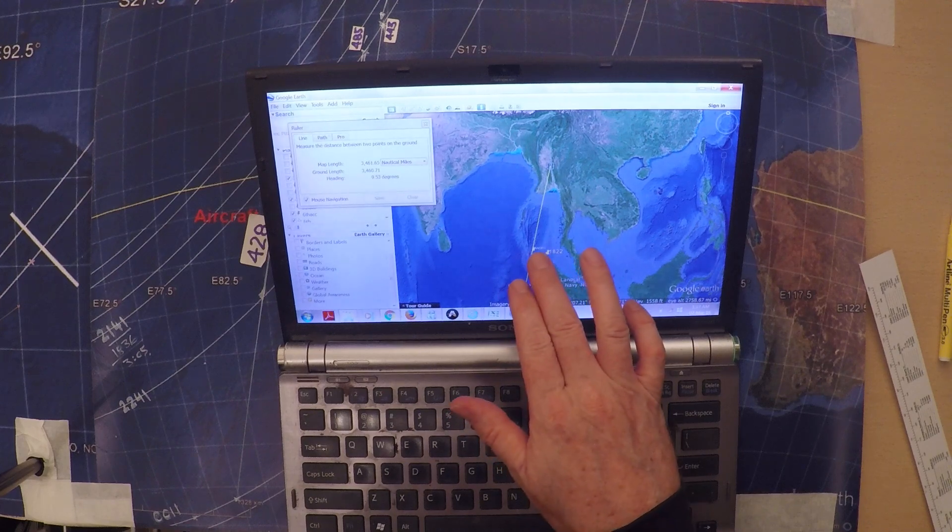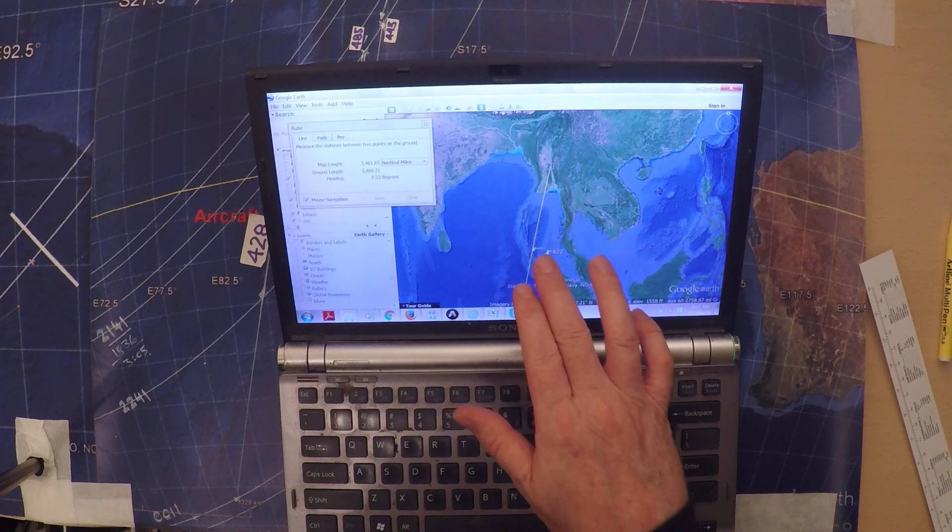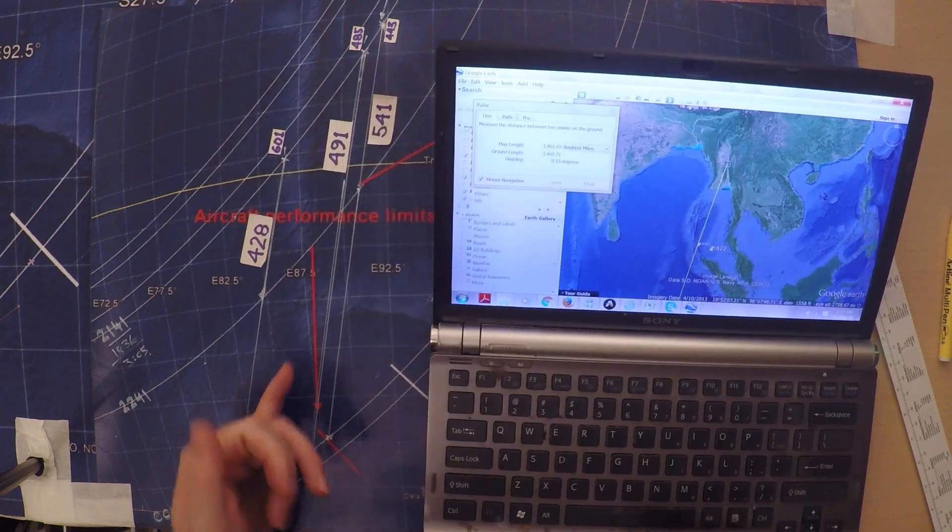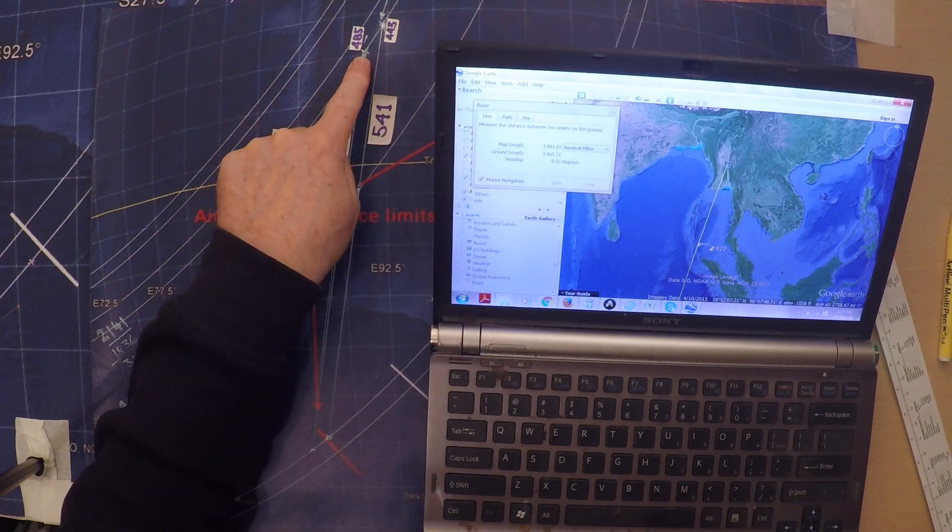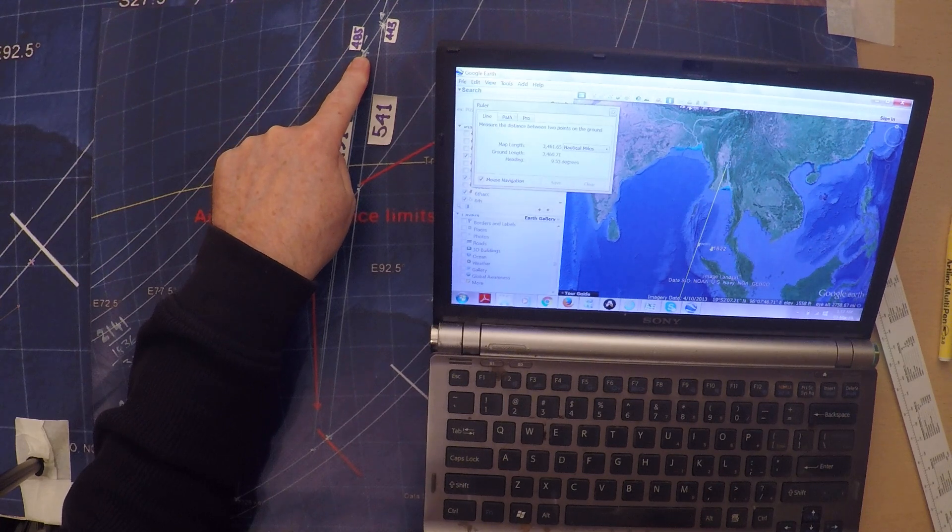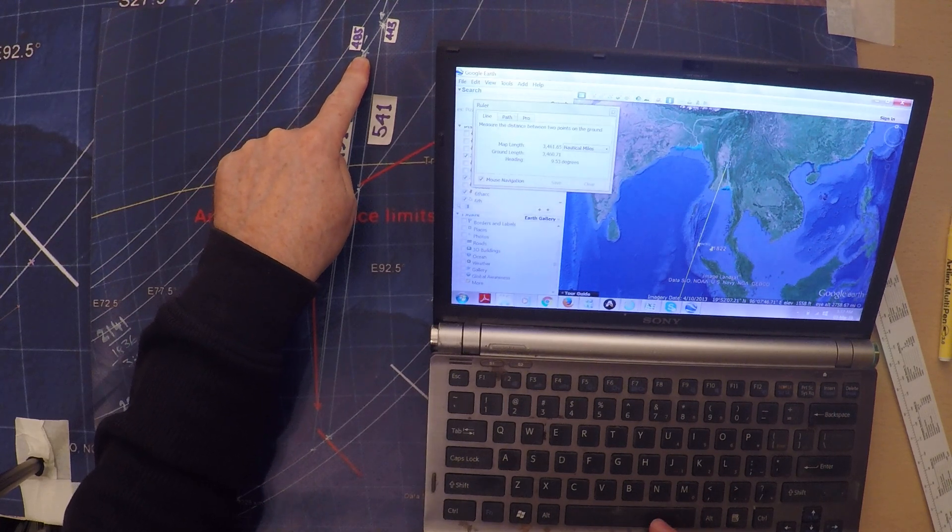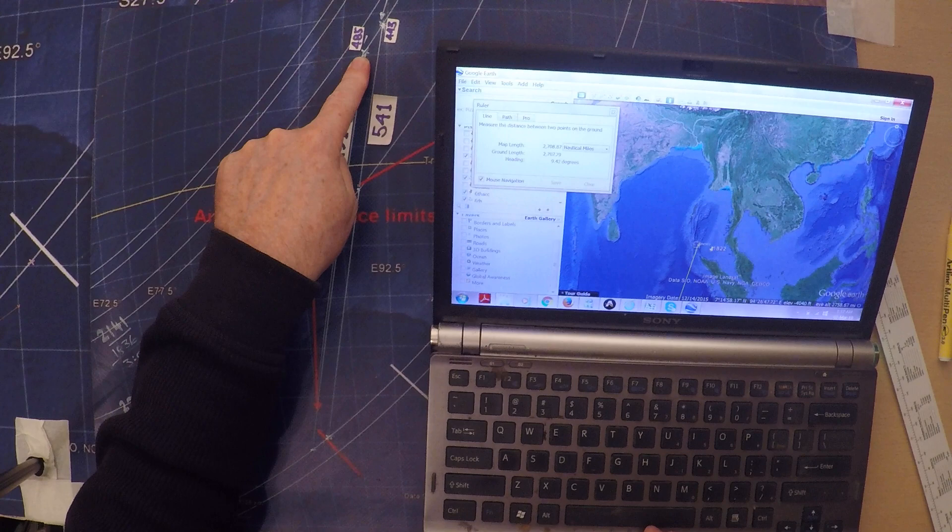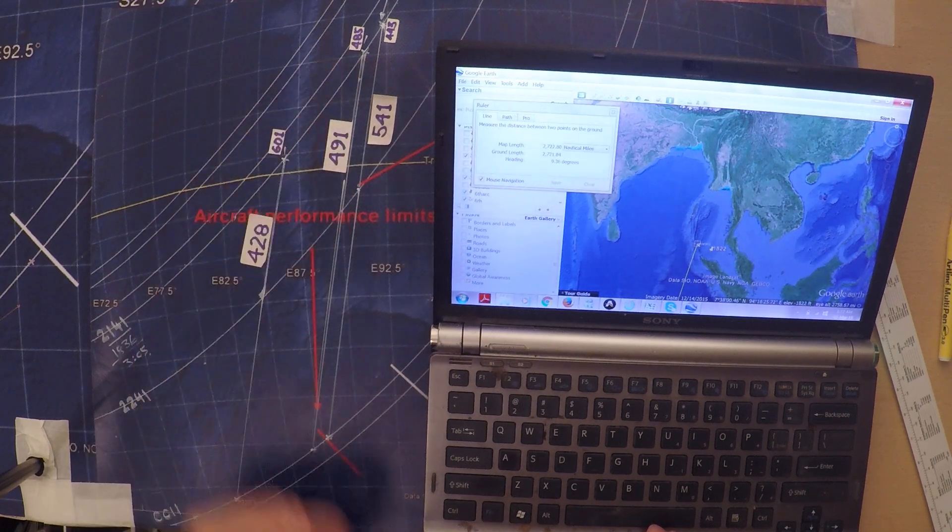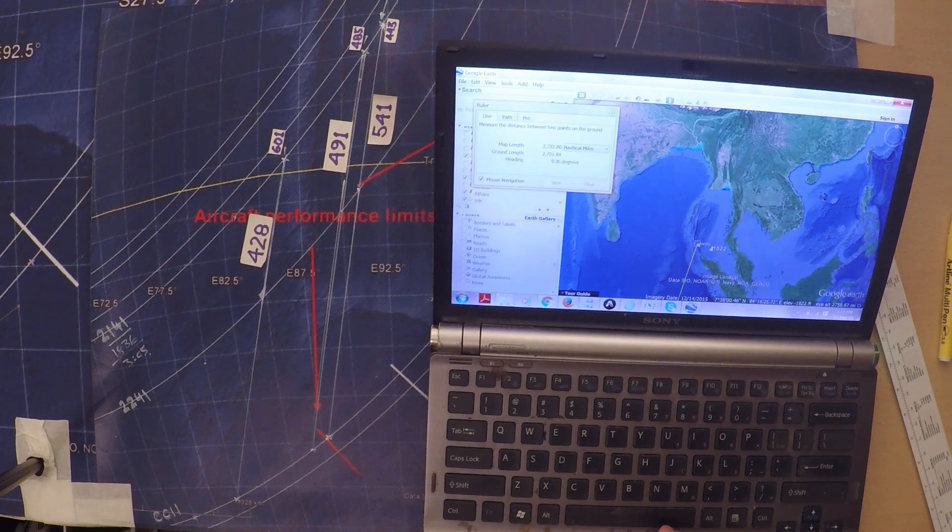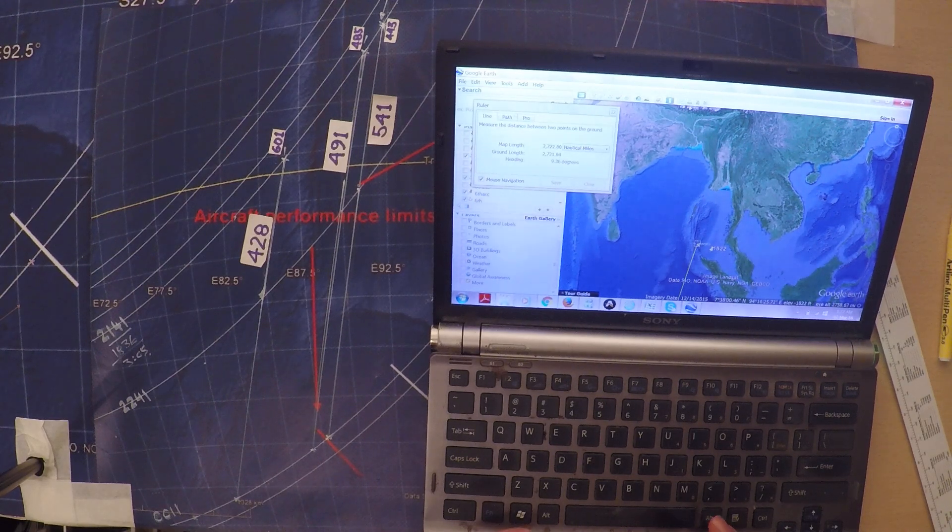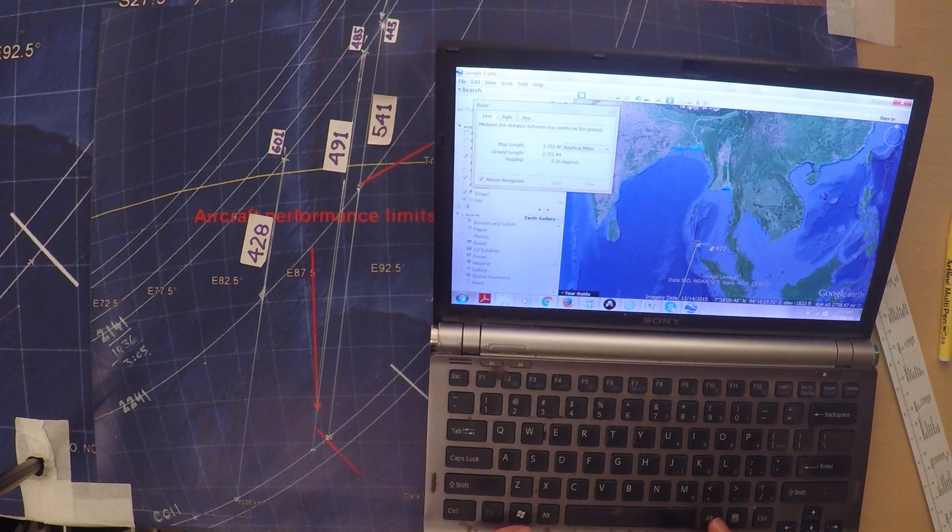This was my eureka moment. The line, the constant speed line here points directly over fifteen hundred miles of ocean to Anoko. And in actual fact, how it's a total distance from the sixth arc to there is two thousand seven hundred and twenty two miles is a straight line. And four hundred and eighty eight knots is the cruising speed of a triple seven.